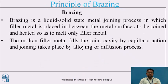Coming to the principles of brazing. There are two types: brazing and braze welding. Brazing is a liquid-solid state metal joining process in which filler metal is placed between the metal surfaces and heated to melt only the filler metal. The filler metal melts above 450 degrees Celsius. The molten filler metal fills the joint cavity by capillary action and joining takes place by an alloying diffusion process.